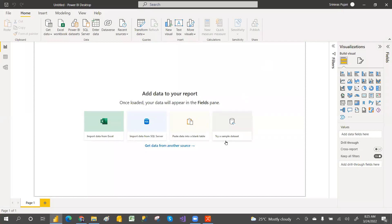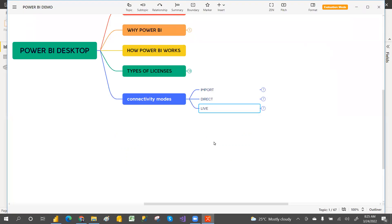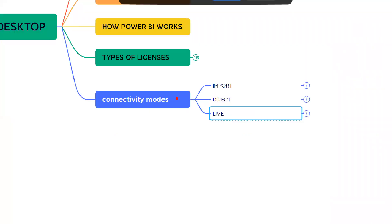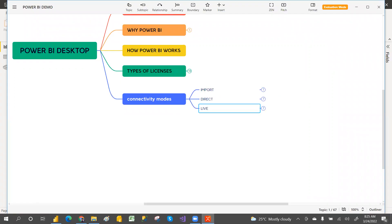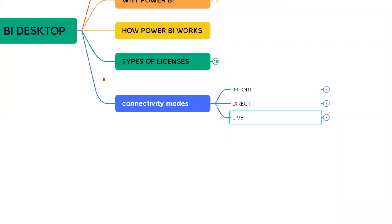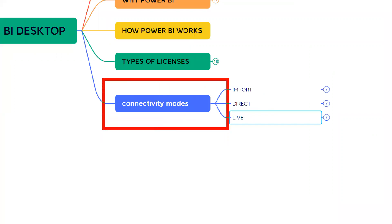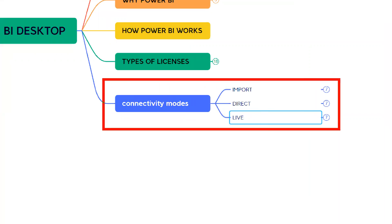Welcome to PCS. In this class we are going to discuss connectivity modes. In Power BI we have three connection modes: Import, Direct, and Live connection. We'll see the differences and when to choose what.